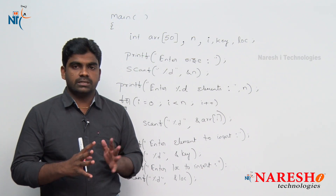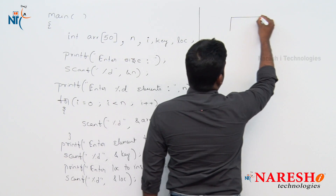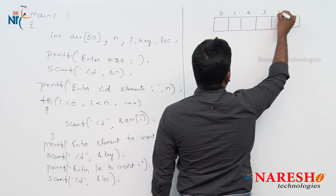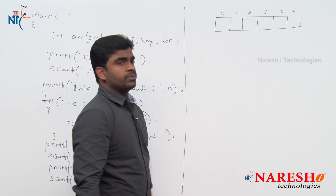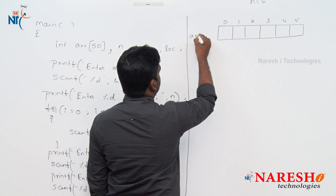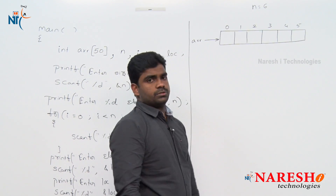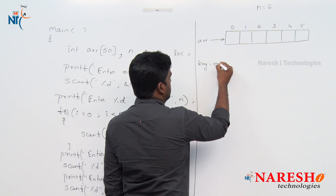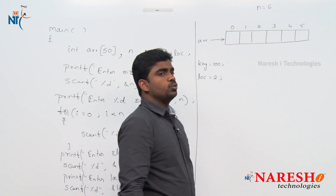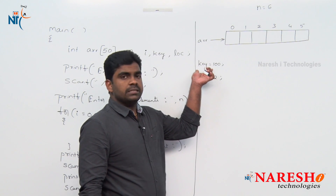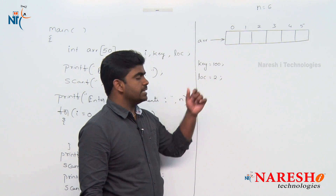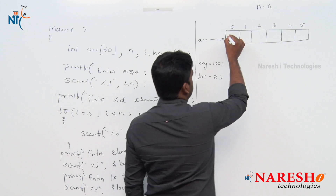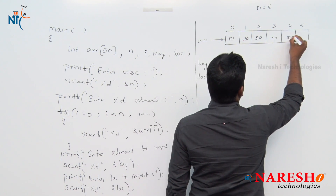Now concentrate on the logic — how to write it. Suppose this is the array, n value consider 6. Index is 0 to 5, and here the array pointer is pointing to the base address of course. Now consider the key element — the new element we want to insert — is 100, and the location is 2. What are the elements of the array? For example: 10, 20, 30, 40, 50, 60.